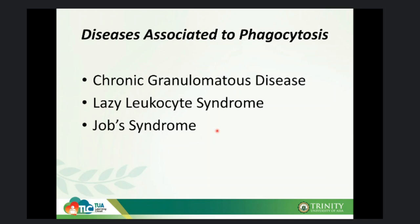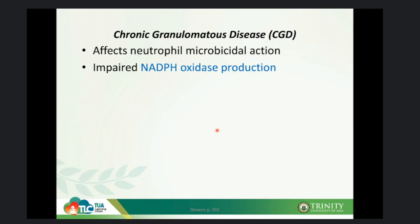For lazy leukocyte syndrome and Job's syndrome, we can use the Boyden Chamber assay to study whether neutrophils have abnormal or normal chemotactic and random activities. For chronic granulomatous disease, we can identify the absence of NADPH oxidase production through the Nitro Blue Tetrazolium test. Chronic granulomatous disease affects neutrophil microbicidal action — they are incapable of killing ingested microorganisms. They engulf but cannot destroy, because of impaired NADPH oxidase production.